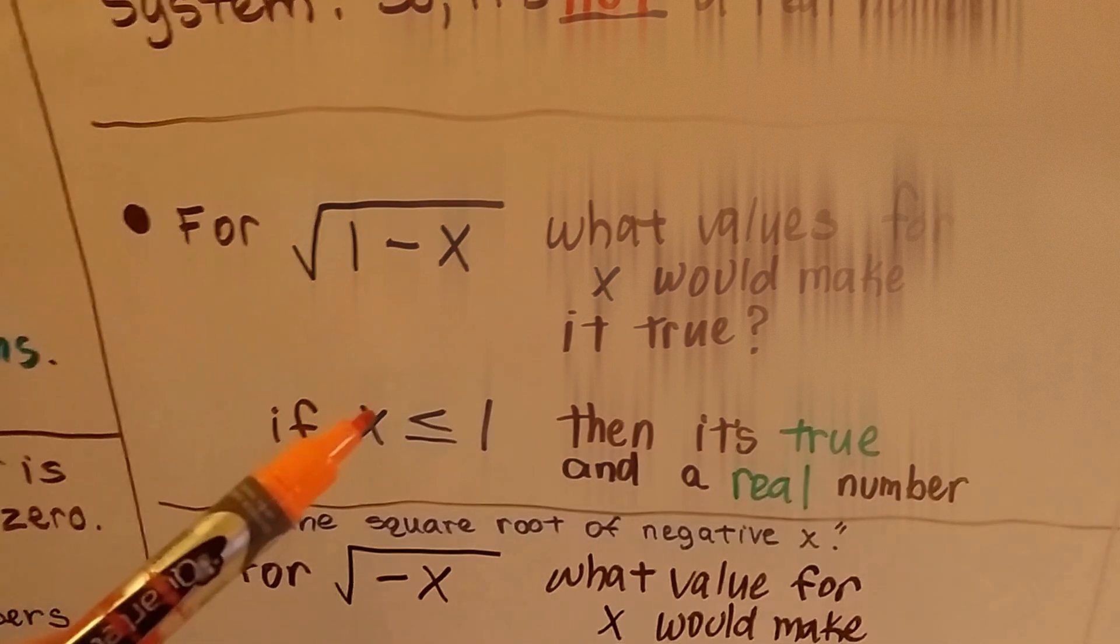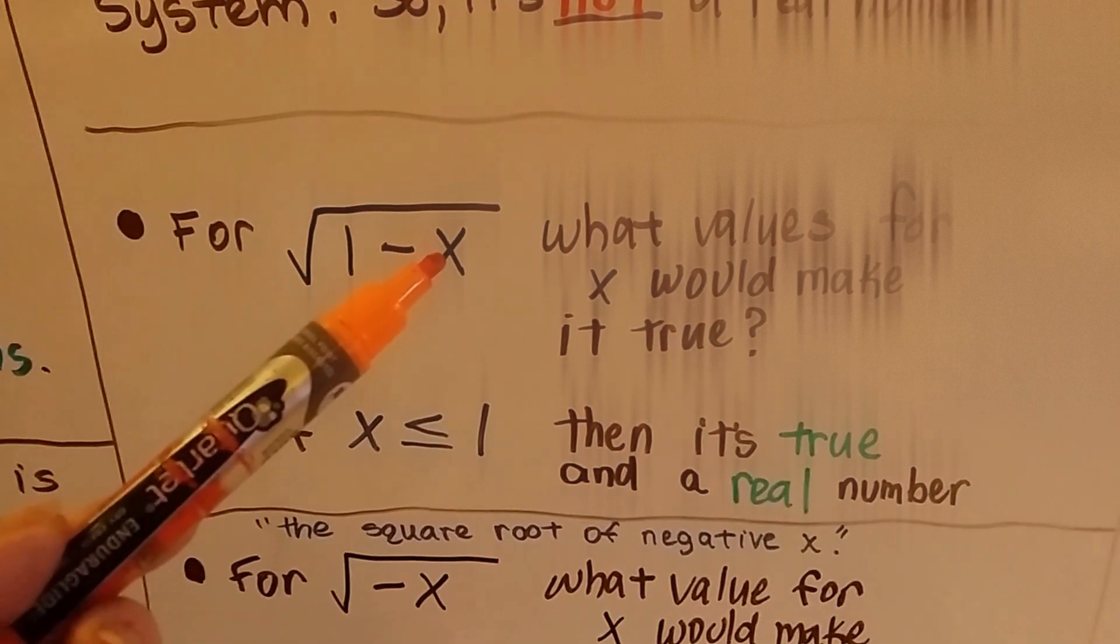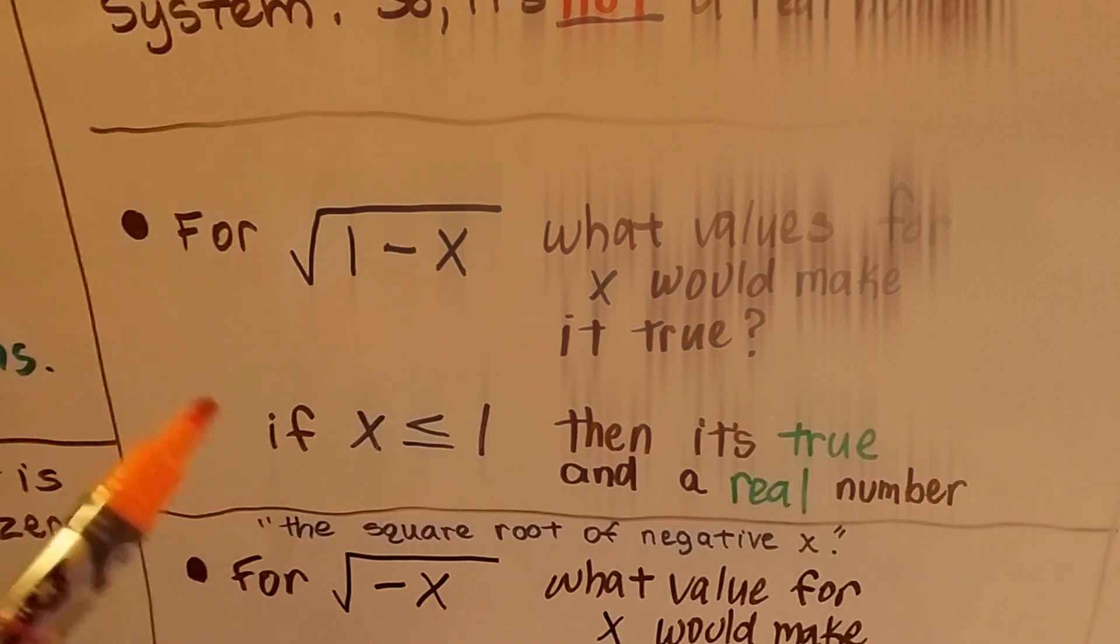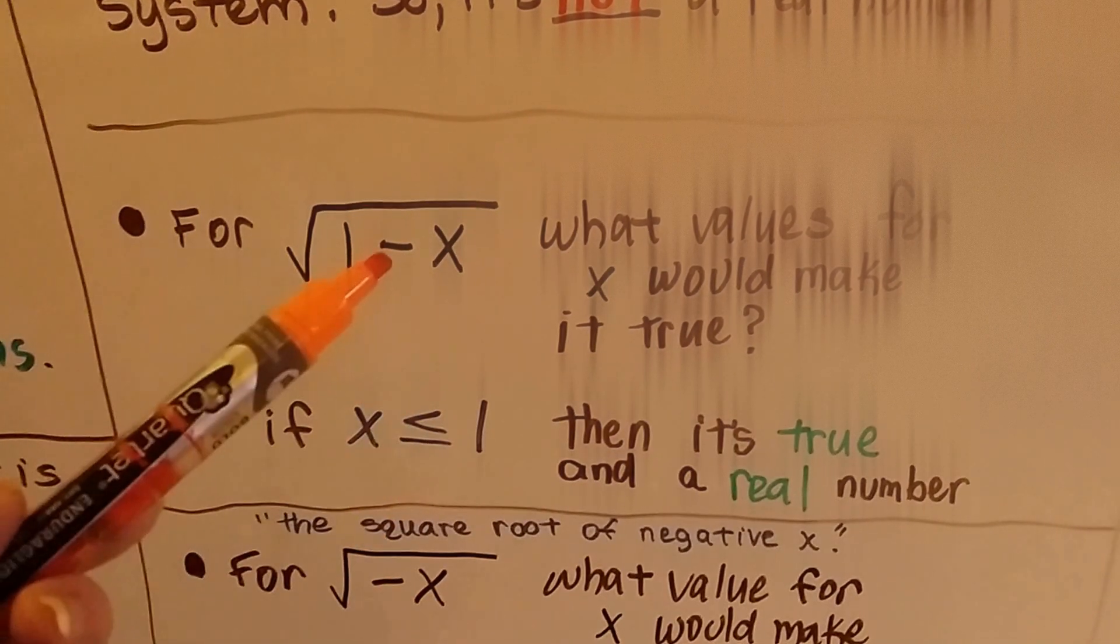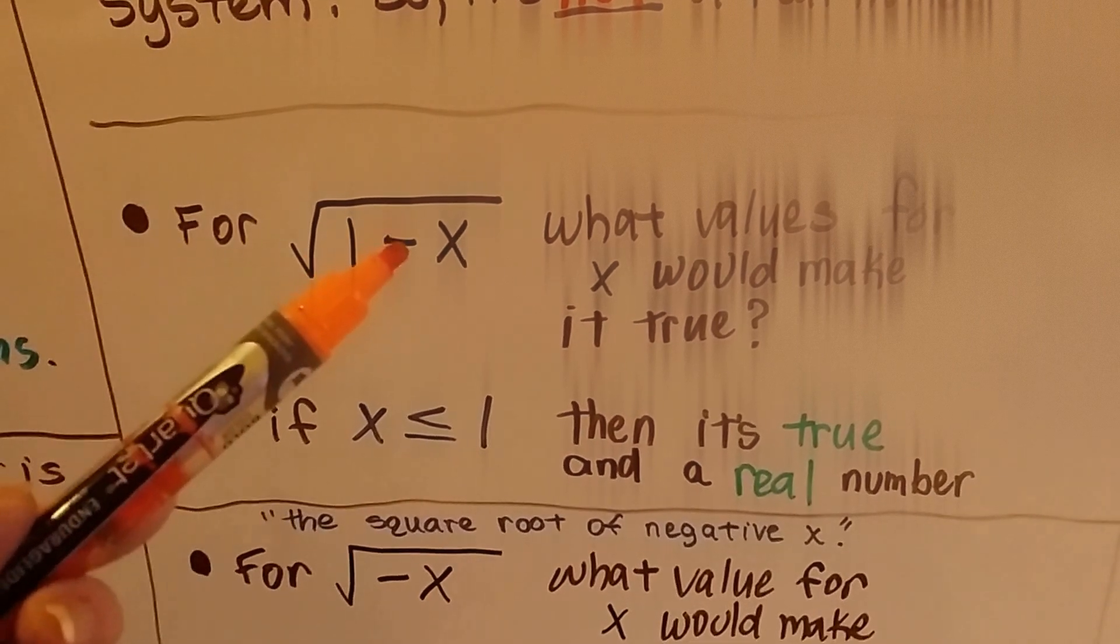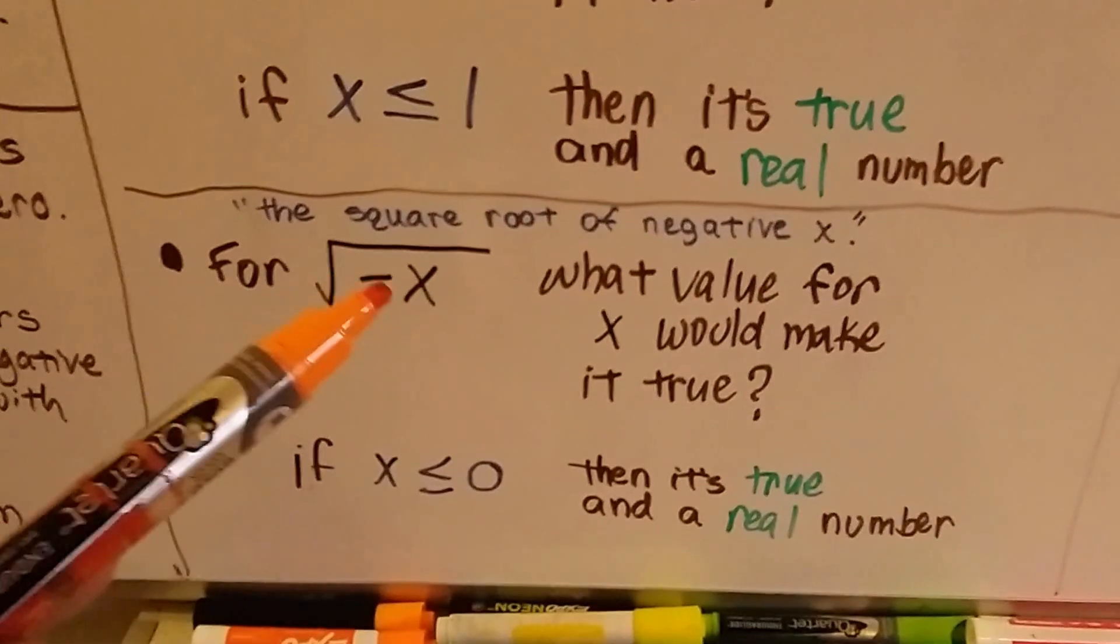So if it was less than a 1, it could be 0. 1 take away 0 would be 1. Square root of 1. That would work. If it was equal to 1, we'd have 1 minus 1. That's 0. Square root of 0 is 0. And the square root of negative x.